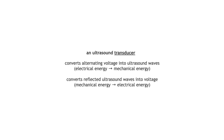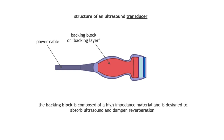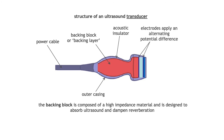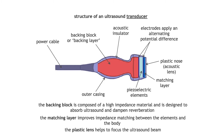Chapter three covers the ultrasound transducer. A transducer converts energy — specifically, an ultrasound transducer converts alternating voltage into ultrasound waves and then converts reflected ultrasound waves back into voltage. Inside a transducer we find: a power cable, a backing block (dampening reverberation and absorbing unwanted reflected ultrasound), an acoustic insulator wrapping the probe, an outer casing, electrodes applying alternating potential difference to piezoelectric elements, a matching layer (improving impedance matching between elements and the body), and a plastic nose or acoustic lens to help focus the beam.